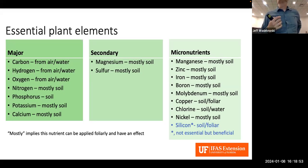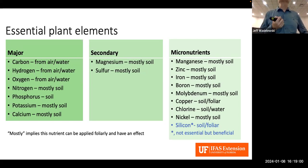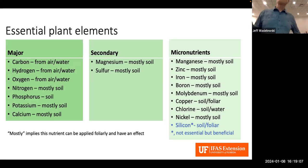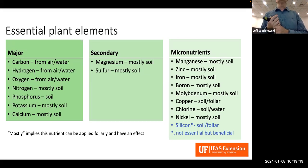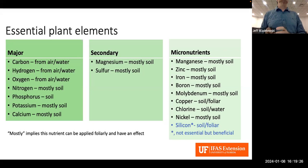Micronutrients are elements needed in small amounts. These include manganese, zinc, iron, boron, molybdenum, copper, chlorine, nickel, and silicon. Silicon is not really an essential element but there has been work to show it can be beneficial for some crops. These are the major categories of elements necessary for plant growth and development.